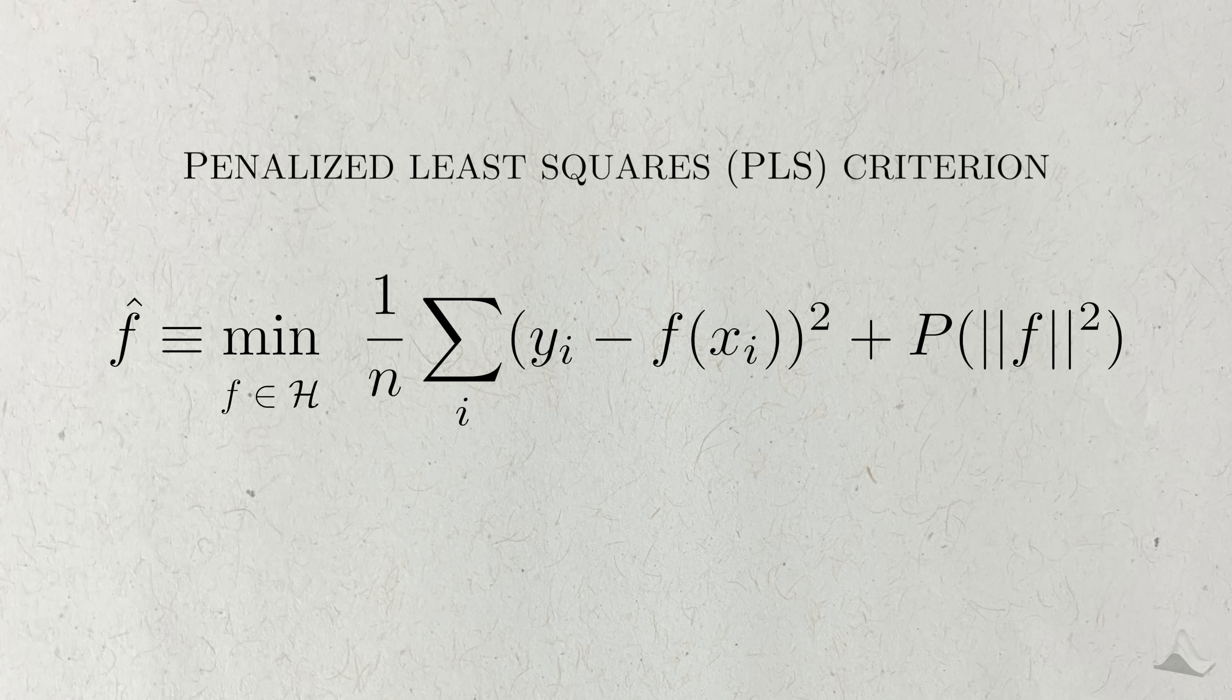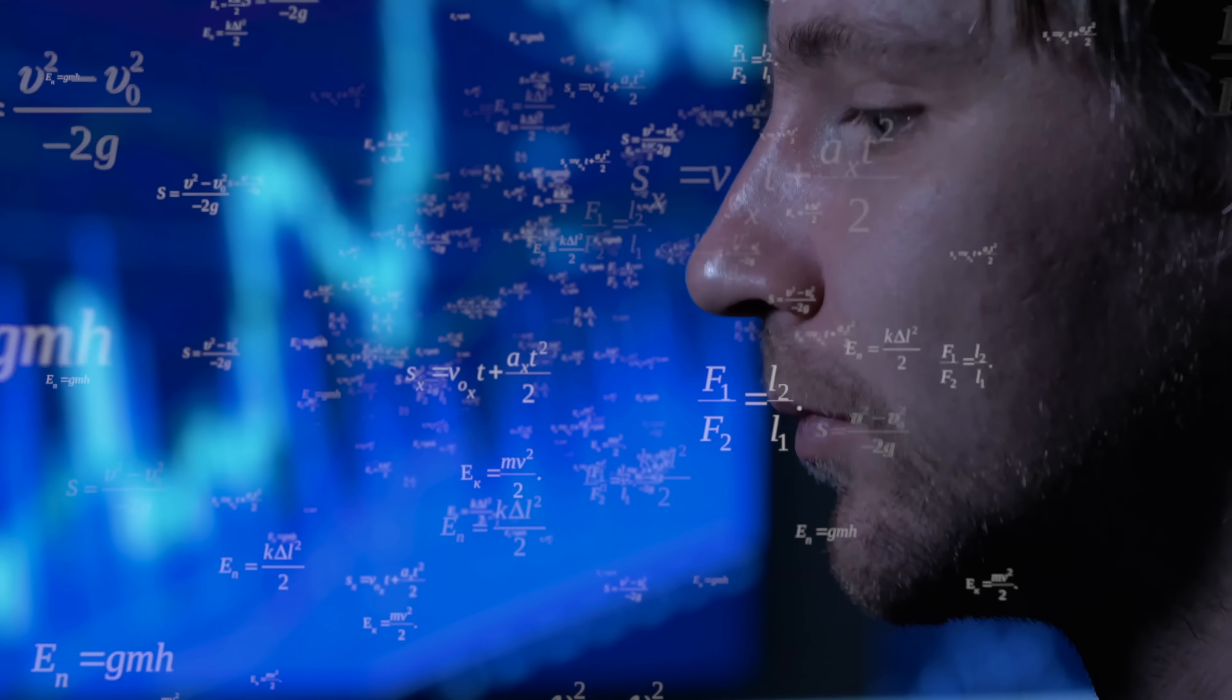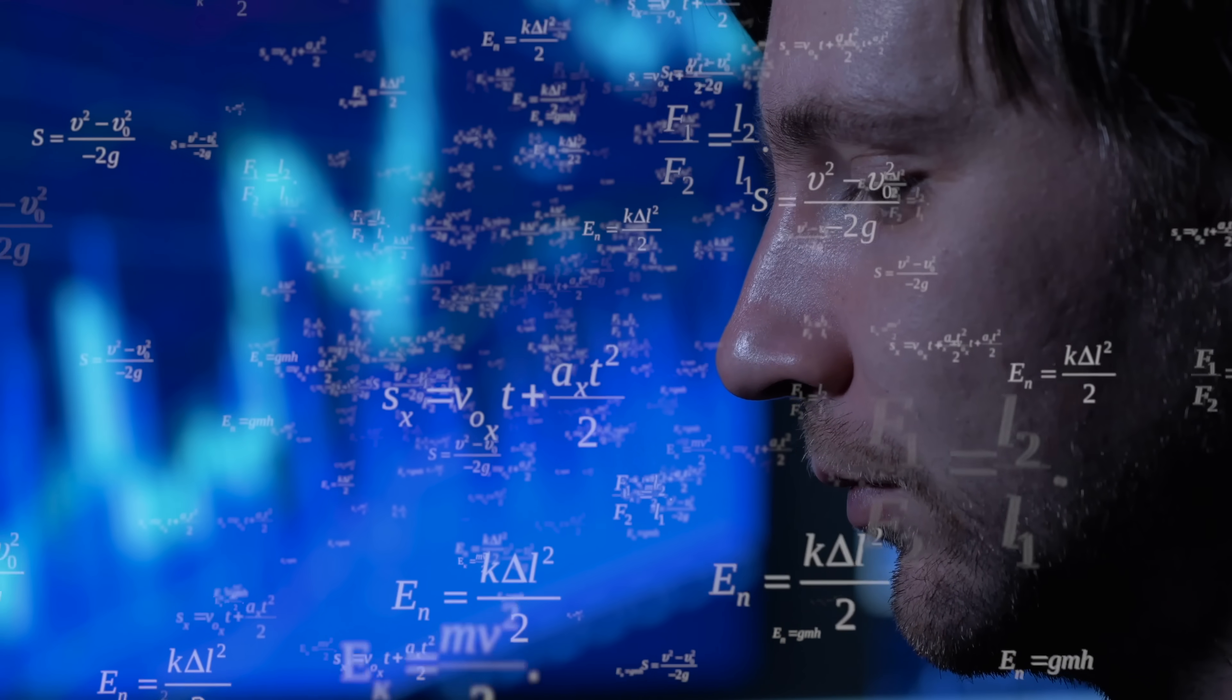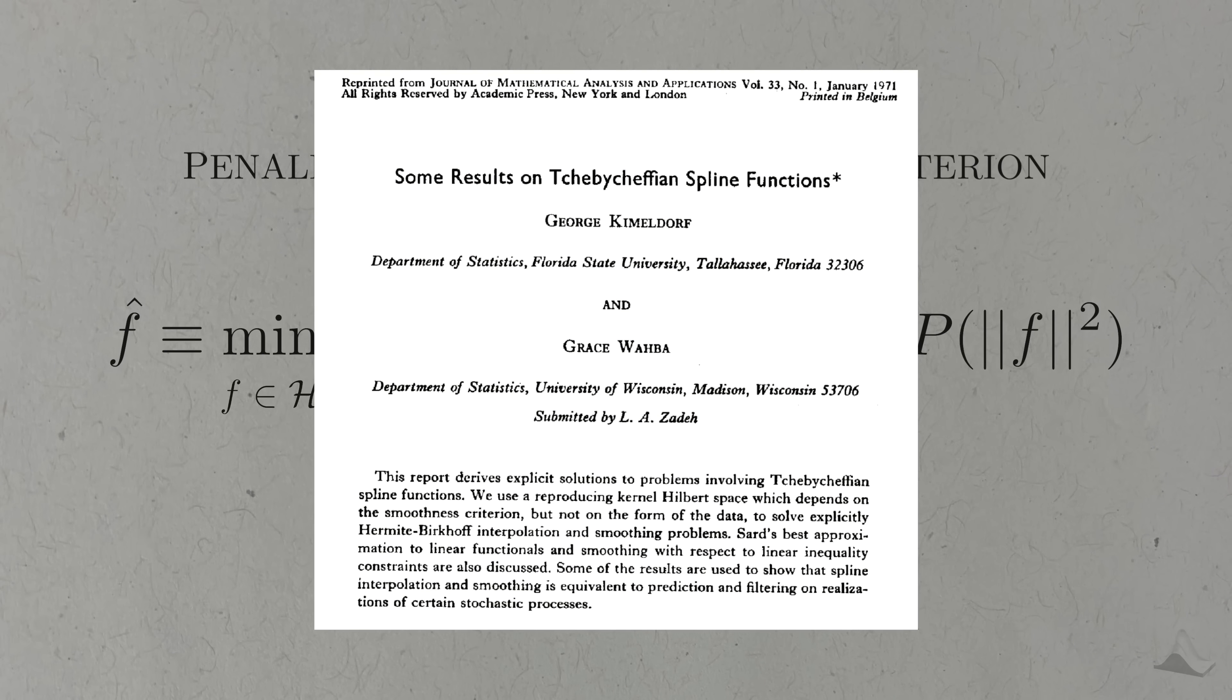So now that we have a way to define our estimated function, we still have a major problem. We don't really have a concrete way to evaluate the function at a predictor. We don't even know what the function looks like, so evaluating it is a no-go. And this is where Grace Wahba comes in.